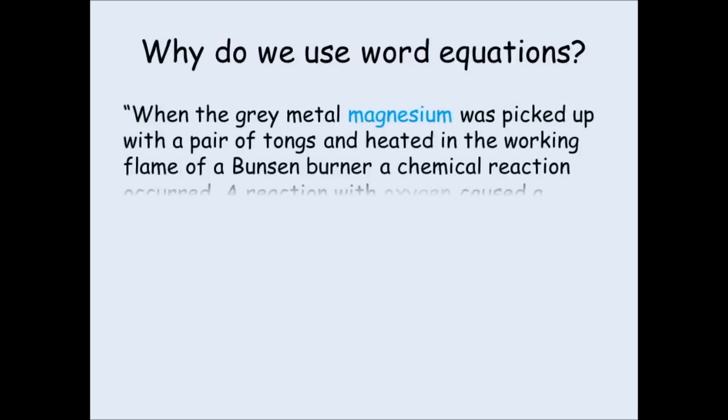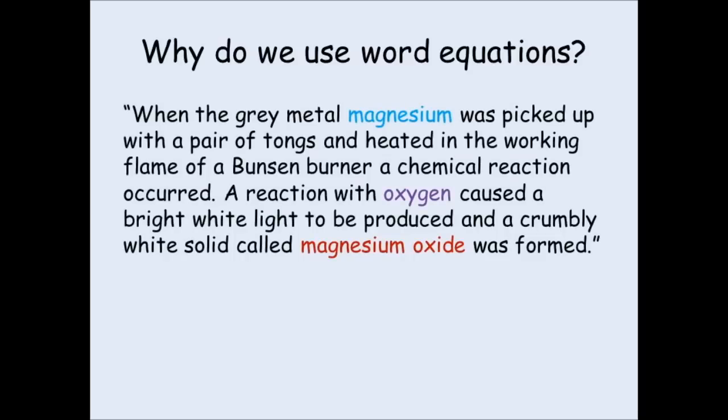So why do we use word equations to describe chemical reactions? Well, you could describe it like this. When the grey metal magnesium was picked up with a pair of tongs and heated in the working flame of a Bunsen burner, a chemical reaction occurred. A reaction with oxygen caused a bright white light to be produced, and a crumbly white solid called magnesium oxide was formed.